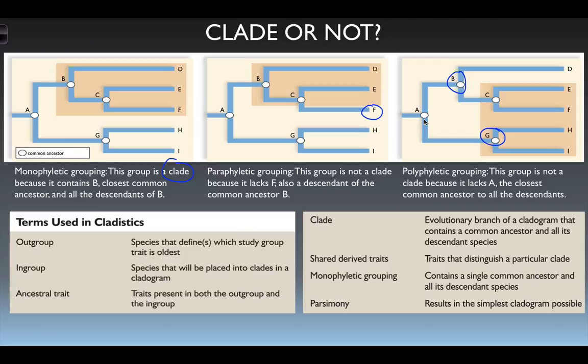Some terms to get used to in cladistics: out group versus in group in cladograms; ancestral trait; clade; shared derived traits; monophyletic grouping; and parsimony. Be able to use these in your vocabulary as you talk about evolutionary history.